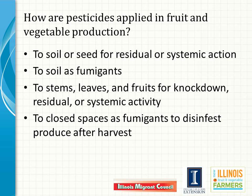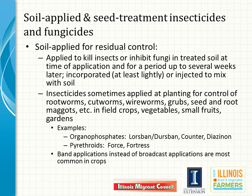Let's look at how pesticides are actually used in fruit and vegetable production: to soil or seed for residual or systemic action, to soil as fumigants, to stems, leaves, and fruits for knockdown, residual, or systemic activity, and to closed spaces as fumigants to disinfest produce. Pesticides may be applied to the soil with the intent that they persist for several days to prevent crop damage from insects or prevent weed growth. Soil-applied pesticides are usually incorporated or mixed at least lightly with the soil. Some are applied in a band, for example a width of seven inches or so, that encompasses the row as the crop is planted, but not the area between rows.